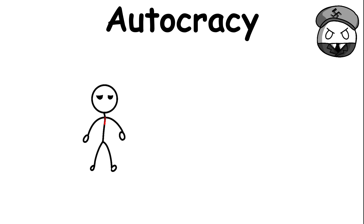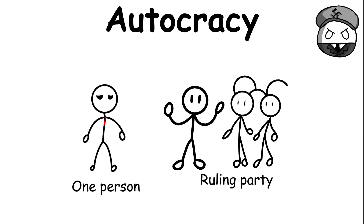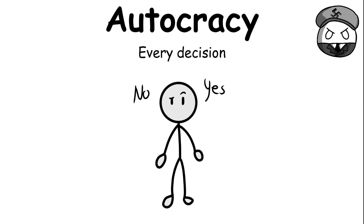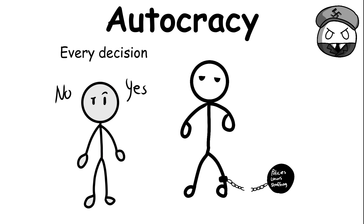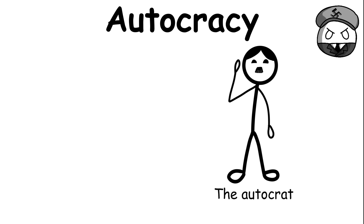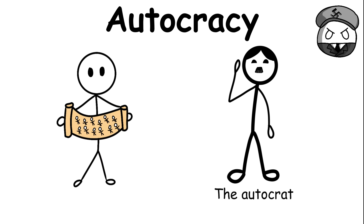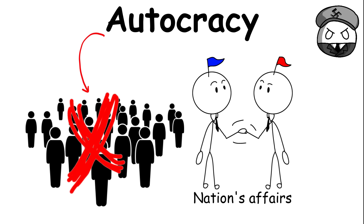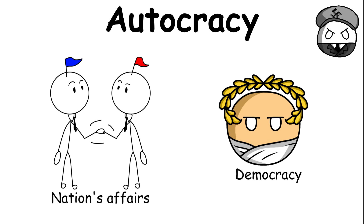An autocracy is when only one person or ruling party holds supreme power over an entire nation. Every decision that the autocratic ruler makes cannot be limited by external factors. These decisions are absolute and should be followed by the country. The autocrat also has total control over what the people can do when it comes to their civil liberties. In an autocracy, the people have no say in the nation's affairs, contrasting it to democracy.